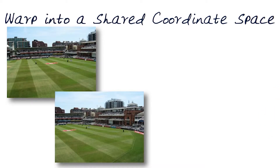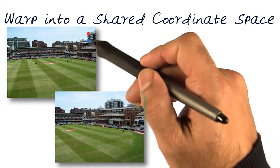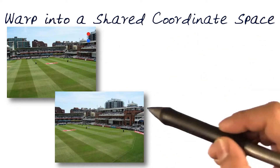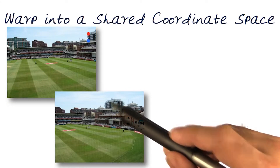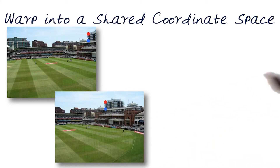This allows us to now start, knowing what H is, and then use that to find a warp between the two different images. Again, let's take these two different images here — these two points that I want to actually be able to model. Of course, these two points are visible here.